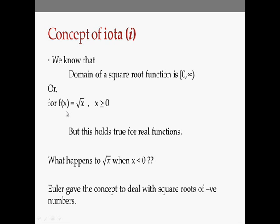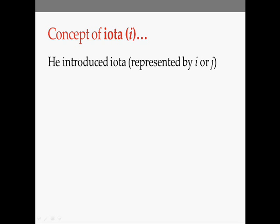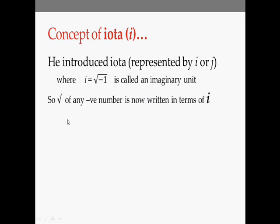Euler was the first one to give the concept to deal with the square root of negative numbers. He introduced the concept of IOTA, represented by 'i' or 'j' in some places, where i is equal to the square root of minus 1. He called this an imaginary unit, so now the square root of any negative number can be represented in terms of IOTA.